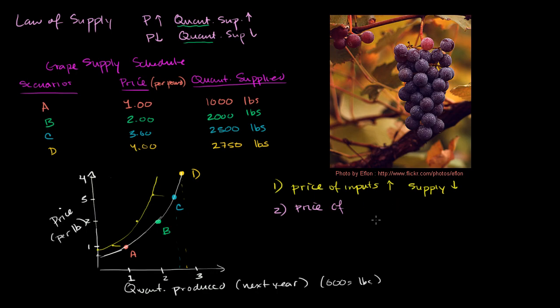but if the price of productive substitutes, the price of other things I could produce, if that goes up, then my supply of grapes would go down.